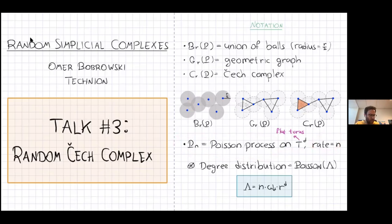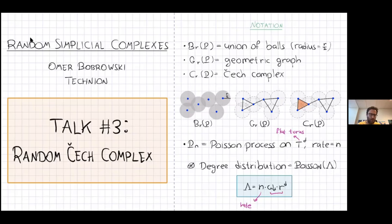It has a fixed rate of N. The degree distribution — the number of neighbors each vertex has — follows a Poisson distribution with parameter lambda. Lambda is given by N times omega_D times R to the D, where omega_D is the volume of a unit ball, so overall this is the volume of a ball of radius R.